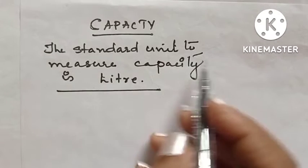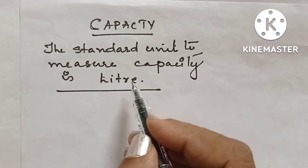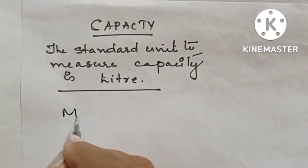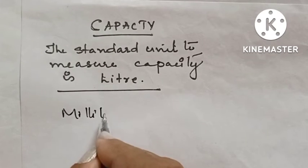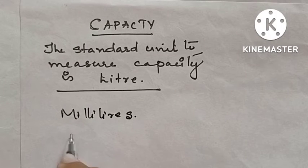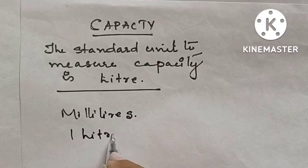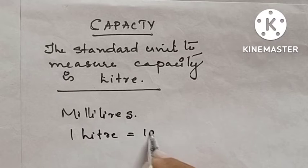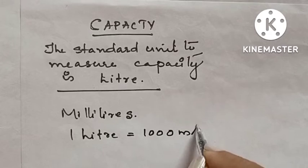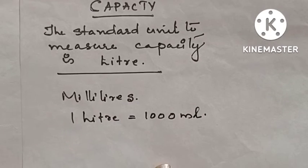Capacity. The standard unit to measure capacity is liter. The smaller unit we will measure in milliliters. We know that one liter is equal to one thousand milliliters.